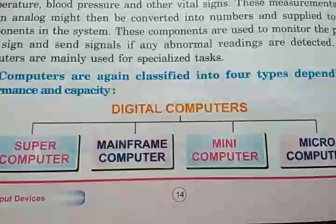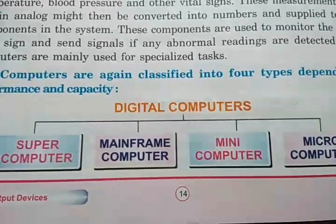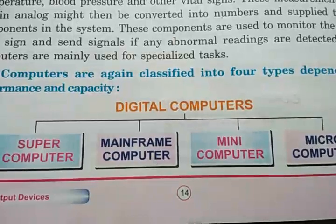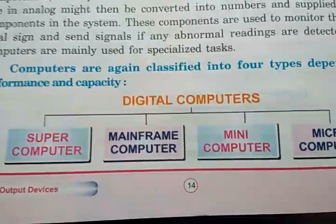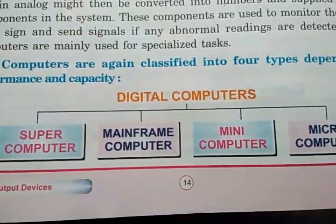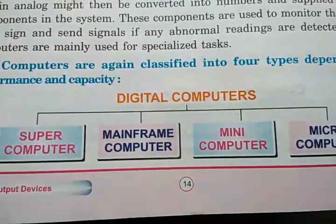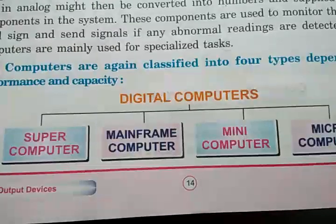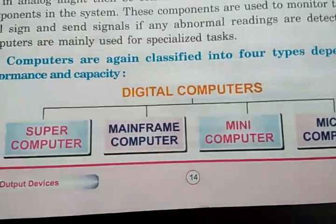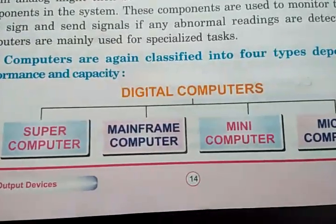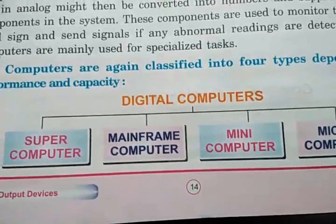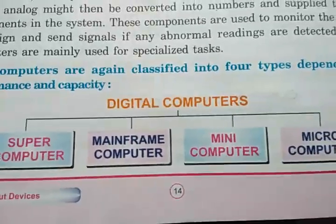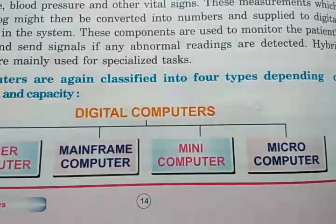The next category of computers is based on their performance and storage capacity. Based on performance and storage capacity, there are four types of computers: supercomputers, mainframe computers, mini computers, and micro computers.